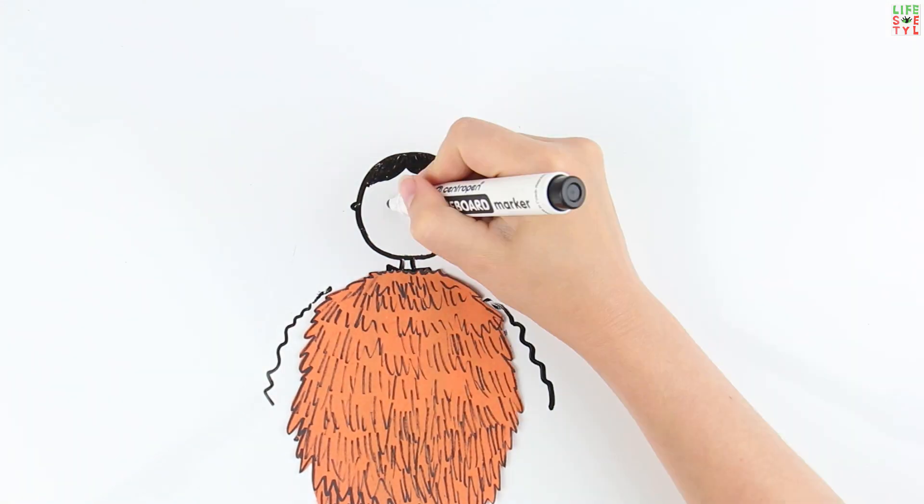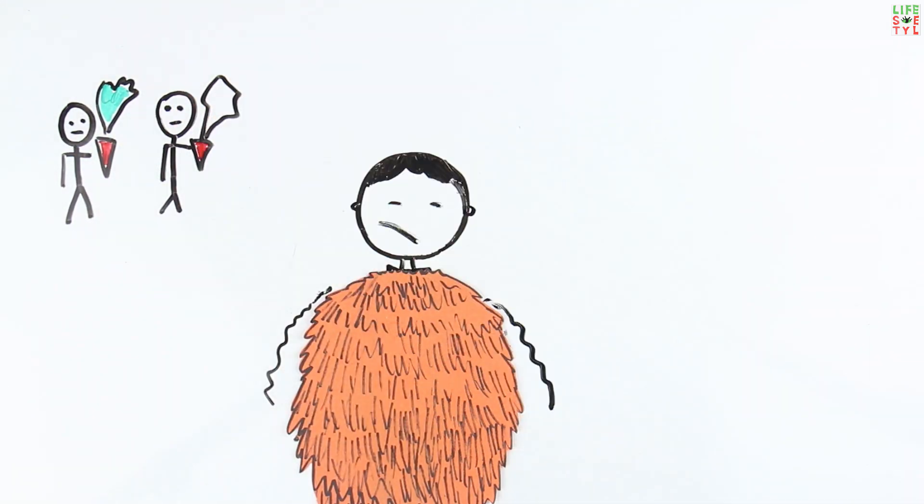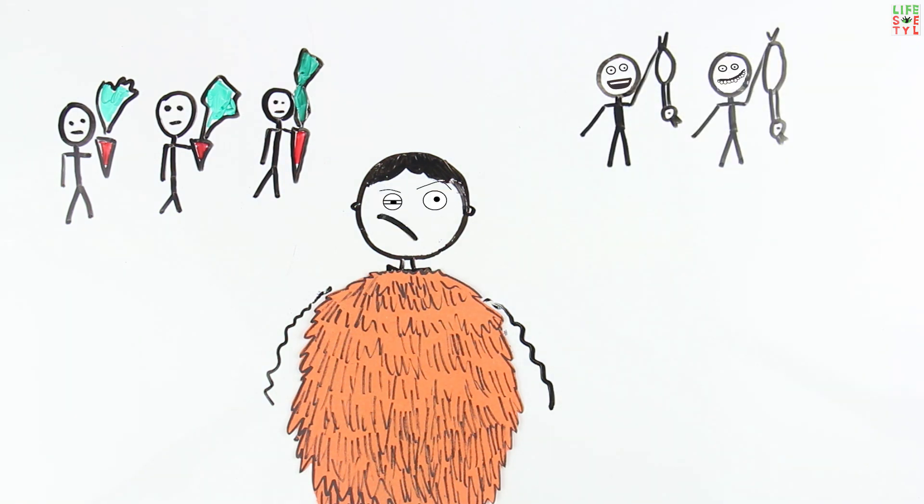You need to decide which group of Australopithecus to join. The first is robust Australopithecus, which feeds on plant-based foods. The second is a different Australopithecus, which has unusually powerful teeth and jaws that are already trying to eat meat.